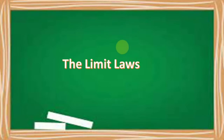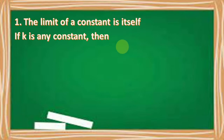Let us now enumerate and discuss the limit laws. Number 1: The limit of a constant is itself. If k is any constant, then the limit of k as x approaches c is equal to k.